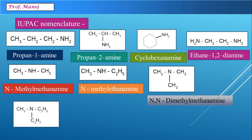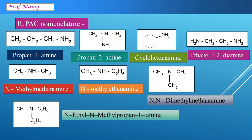Now imagine an example where all three groups are quite different: CH3, C2H5, and C3H7. The longest chain is propan-1-amine, to which N-ethyl and N-methyl groups are connected. So the name is N-ethyl-N-methyl-propan-1-amine.